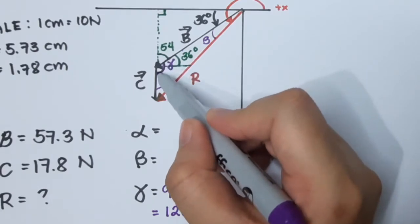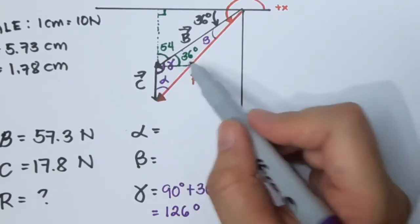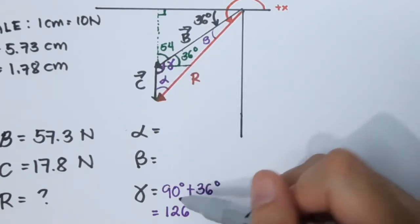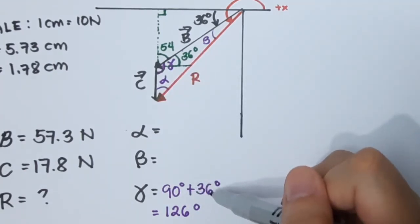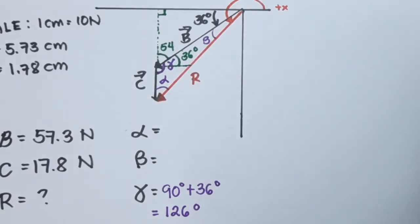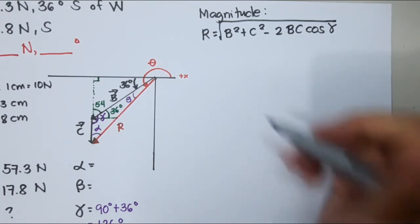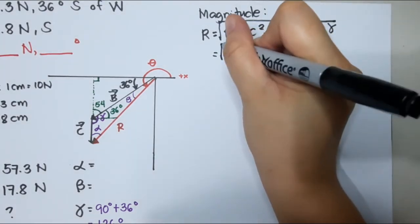Since this is the whole of this is gamma, and we know if we will make a triangle this is 90 plus this angle, so 90 plus 36 is equal to 126. Let's substitute the given now for R.